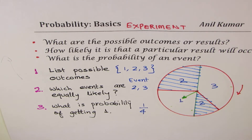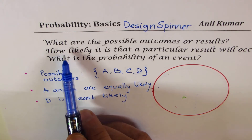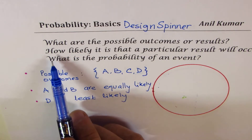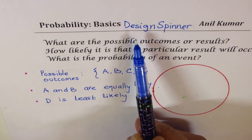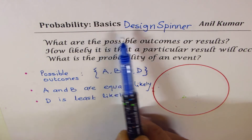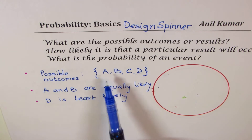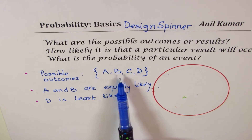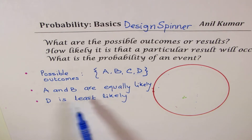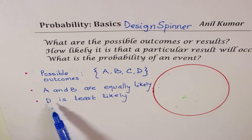Now let's look at other questions related to spinners. This time we are designing a spinner. We need to design a spinner whose possible outcomes are A, B, C, and D — so we divide it into 4 parts. A and B are equally likely, and D is least likely.